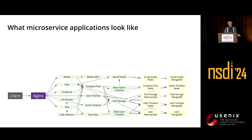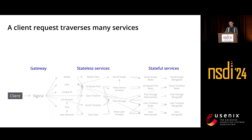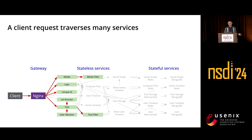The application I'm showing here is one of the benchmark applications we used in our evaluation. It's called Social Network. A typical microservice application like this will have a gateway, some stateless services which process business logics such as posting a message on this social network, and some stateful services like database and cache. When the user posts a message, the client sends a request to the gateway, which then generates a series of internal requests that traverses many different services.